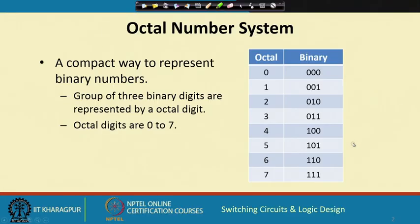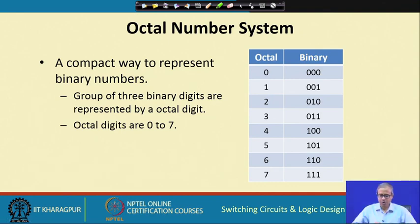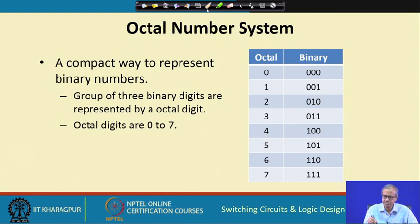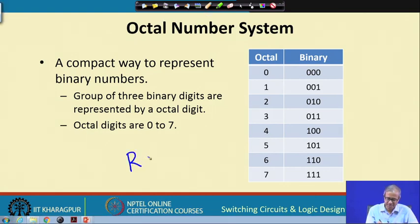Octal and hexadecimal numbers are, in a sense, a compact way of representing binary numbers — that is one way you can look at it. Of course, they are separate number systems in their own right, but their main use is to represent binary numbers in a compact way. The octal number system — 'octal' means 8 — is a weighted number system with a radix of 8, meaning its digits are 0 to 7.